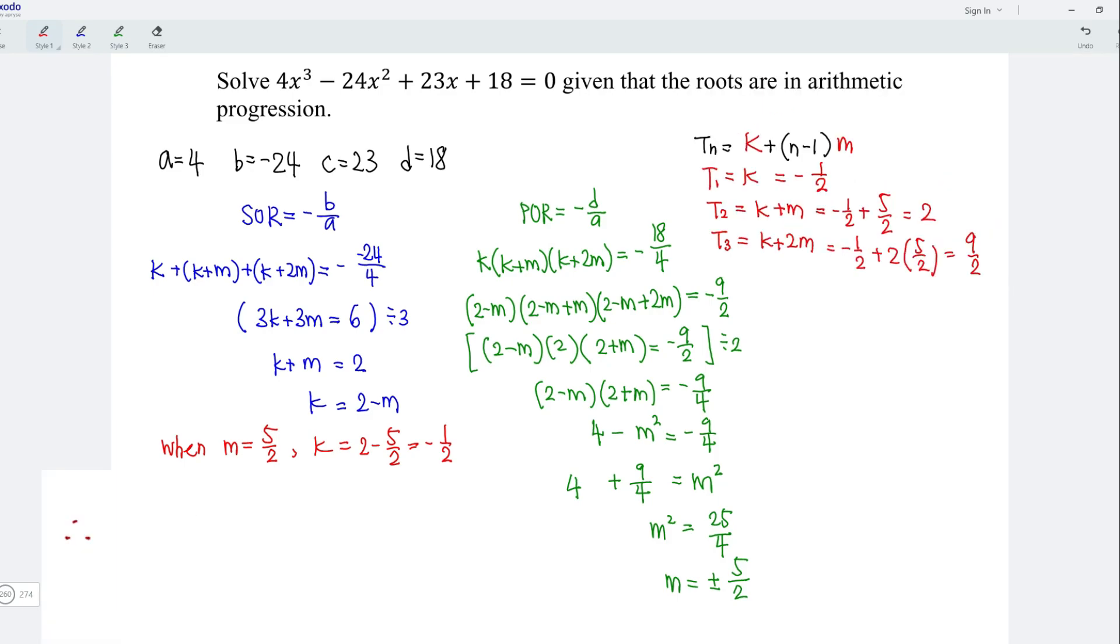Therefore, the roots are negative 1 over 2, 2, and 9 over 2. And this is when M is equal to 5 over 2. We obtain answer in ascending order.